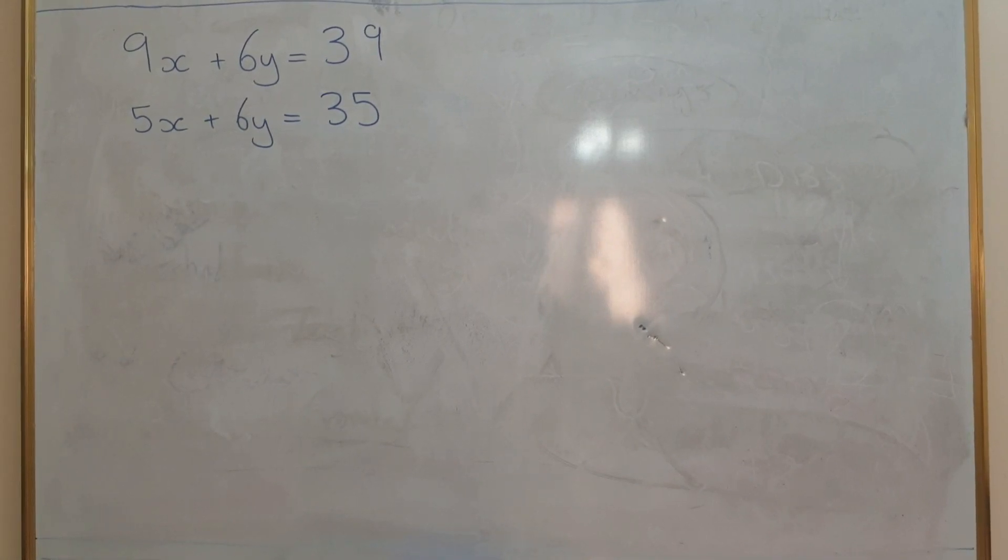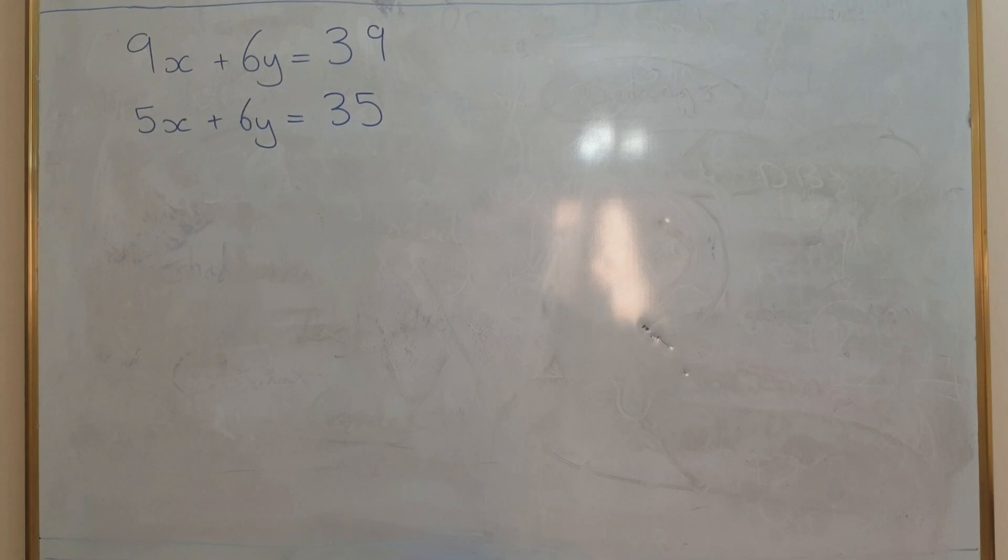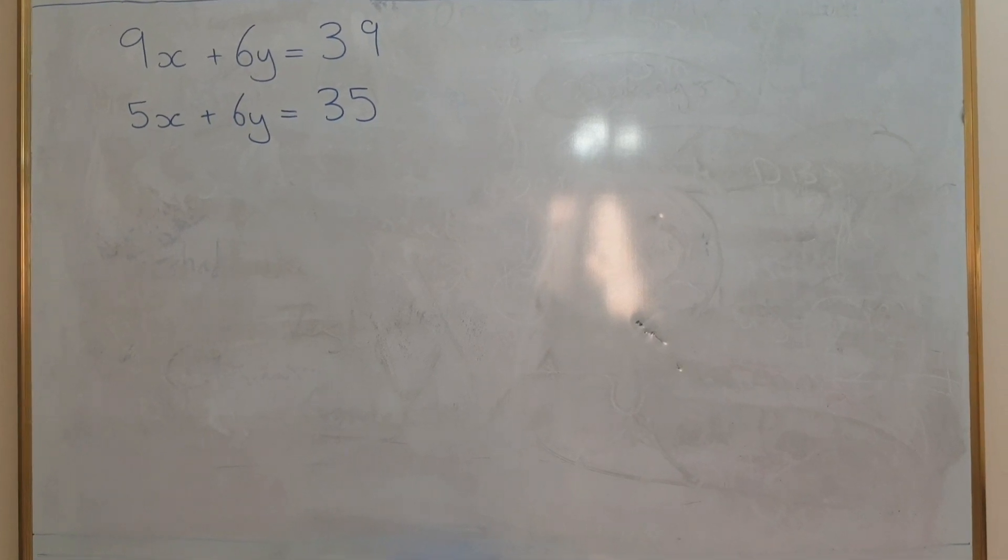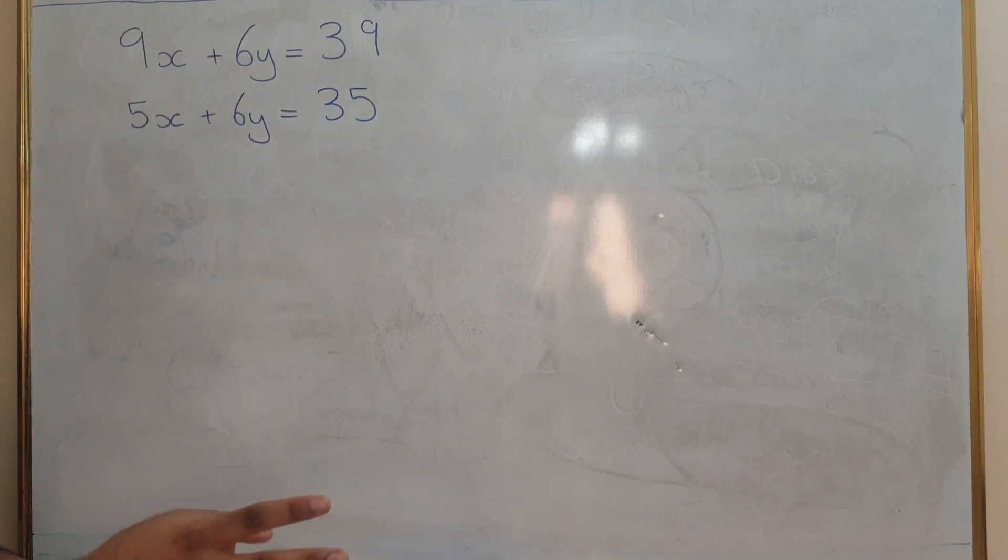In this video I'm going to show you how to solve a pair of simultaneous equations when you've got the same sign in both equations and the same coefficient in front of one of the unknowns. First let's start off with the coefficients. The number in front of the letter in both cases is the coefficient.